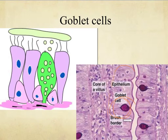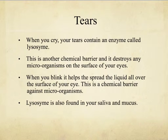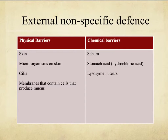Tears contain lysozyme, which is an enzyme and another chemical barrier able to destroy microorganisms. When you blink, it spreads the liquid over the surface of your eye. Lysozyme is also found in saliva and in mucus. To summarize: physical barriers include skin, cilia, and mucus membranes with goblet cells. Chemical barriers include sebum, stomach acid with a pH of 2, and lysozyme in tears.